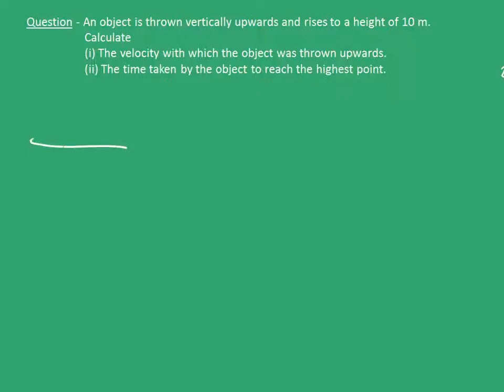Suppose this is the surface of the earth and this is the ball. Now this ball has been thrown upwards with some velocity u which we have to find out, and it reaches a height of 10 meters. So this is my 10 meters. Now I am considering the downward direction to be positive.